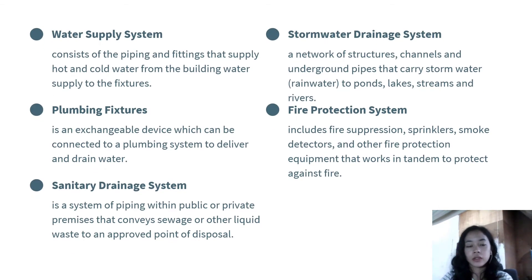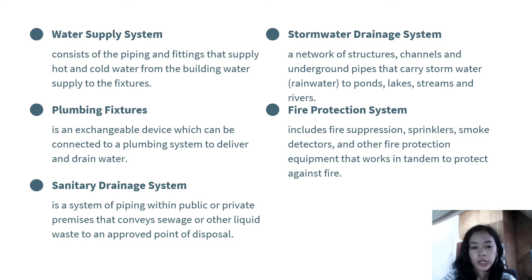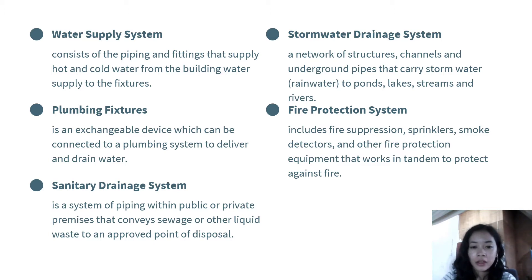The water supply system consists of piping and fittings that supply hot and cold water from the building water supply to the fixtures. It conveys water from the source to the water outlets. Next is the plumbing fixtures — an exchangeable device which can be connected to a plumbing system to deliver and drain water. Examples are faucets and sinks, toilets, shower heads, bathtubs, and many more.